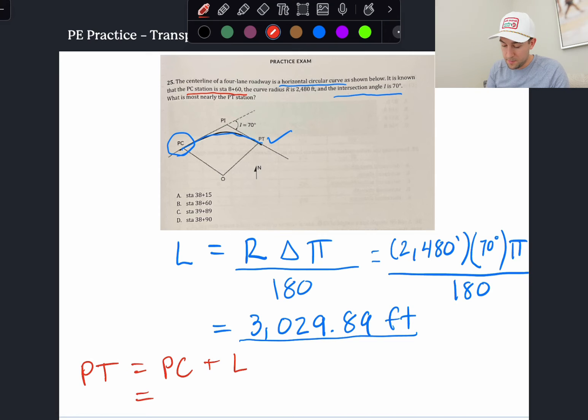Well, if we know that PC is station 860 plus this linear feet right here, we can convert that linear feet to a station, right? So 3,029 feet is also the same as 30 plus 29.89.